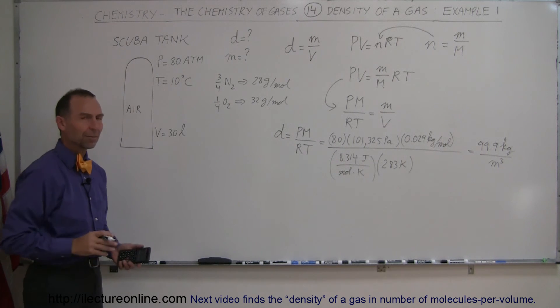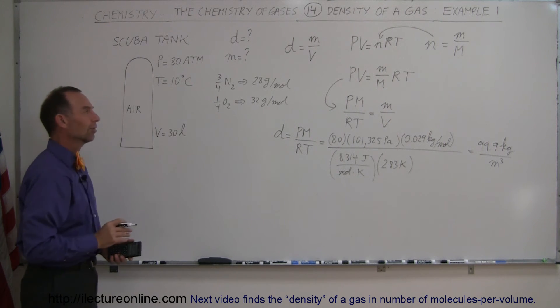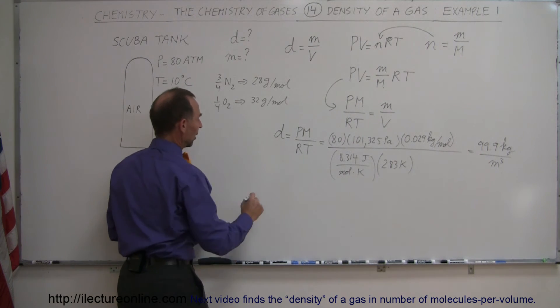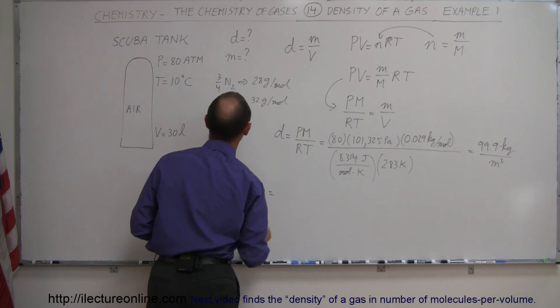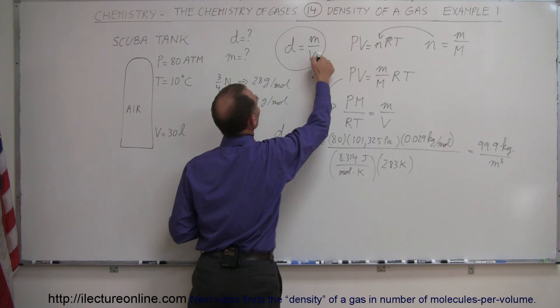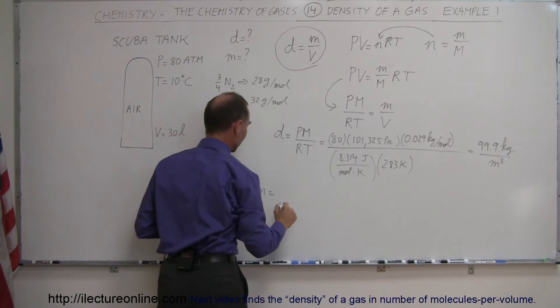Luckily the scuba tank isn't that big, it's only 30 liters in size, so then what would be the mass of the air? So now we can say that mass is equal to, now let's take our equation right here, this density equals mass over volume, so therefore mass is density times volume.